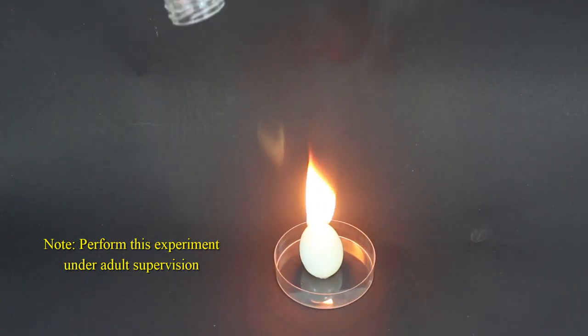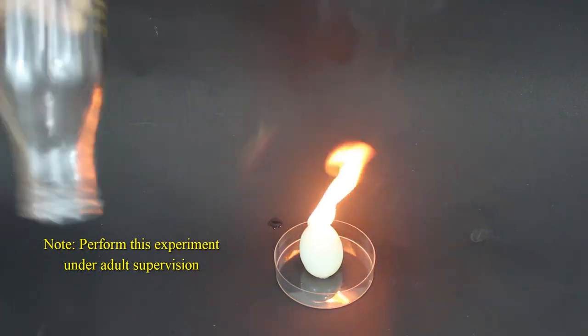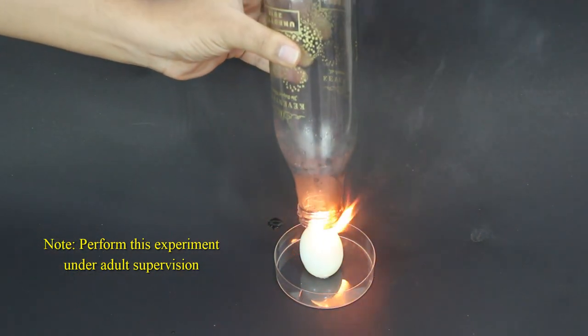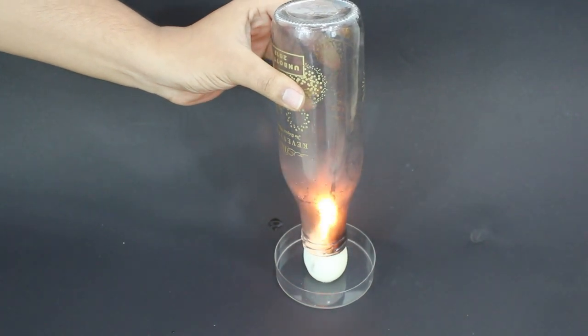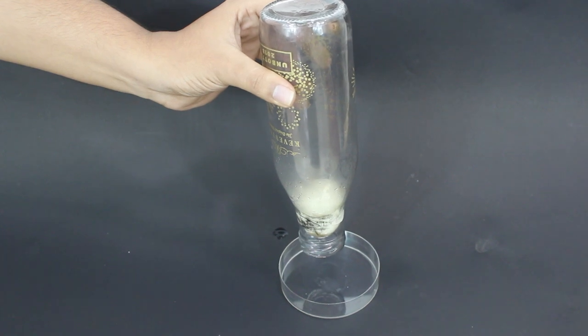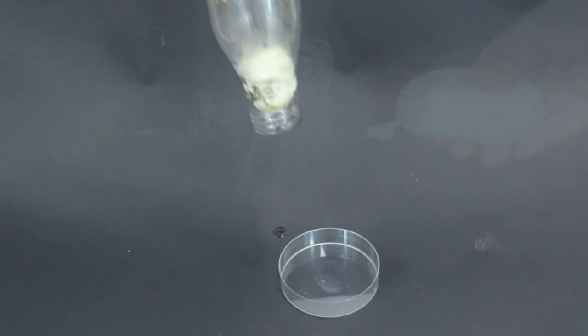Allow the flame to heat up the air inside the bottle for few seconds and then place the bottle on the flame such that the bottle should touch the egg. The camphor flame will go off and egg will get sucked up in the bottle making a loud pop sound.